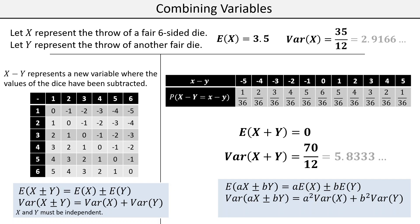This form also applies when we have multiples of X and multiples of Y — we bring out the coefficient of the variable and square it on the outside.